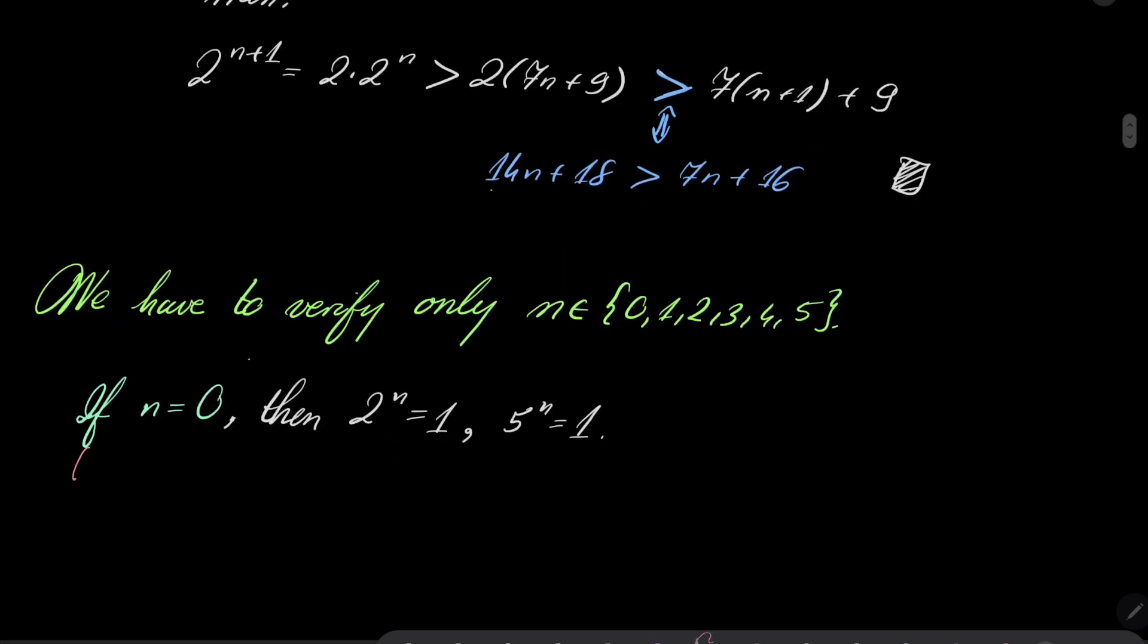If n equals 1, then 2 to the power of n is 2, 5 to the power of n is 5, and we don't have equality.